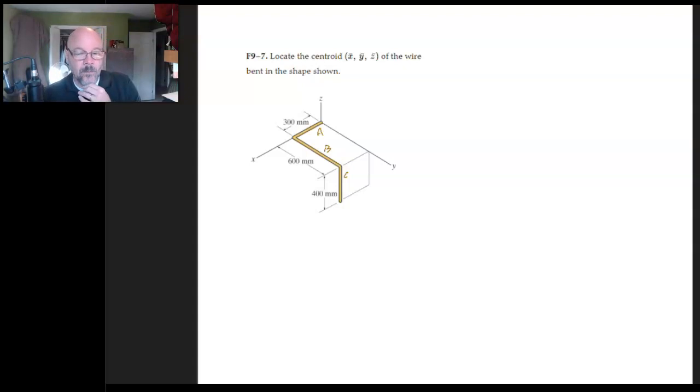Now, so, what we'll do to get going on this is we're going to figure out first the length of each part. So I need the length of A, which is super easy, 300 millimeters, and B, 600, and C, which is 400.